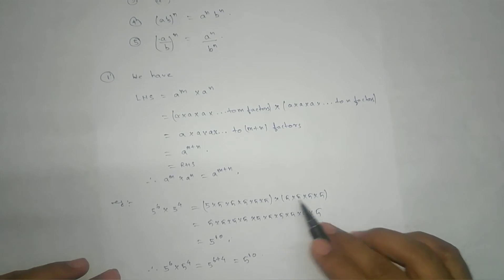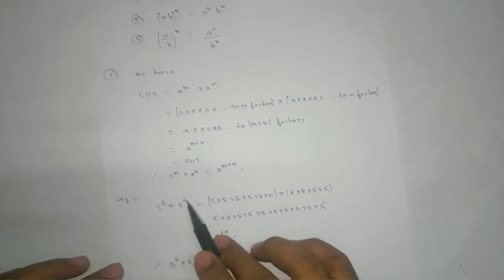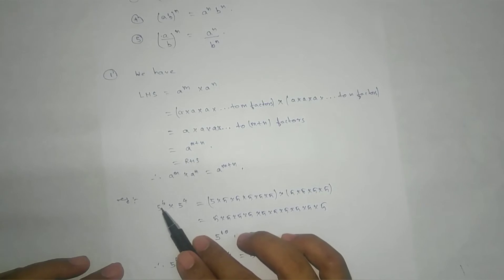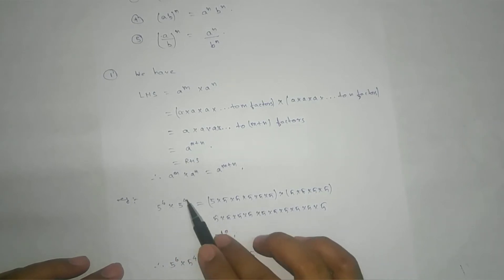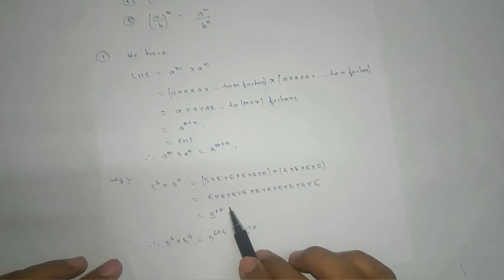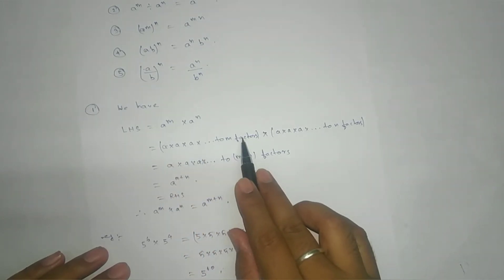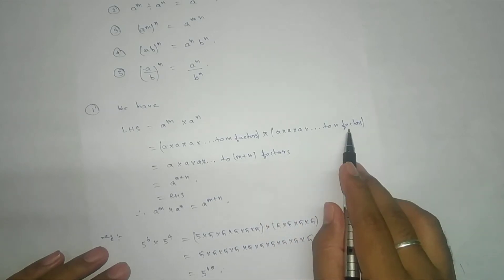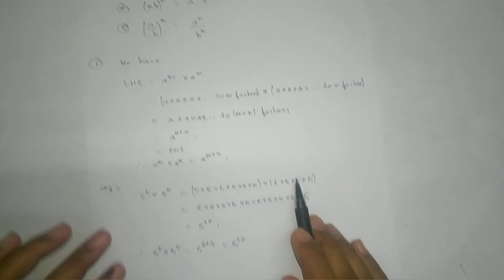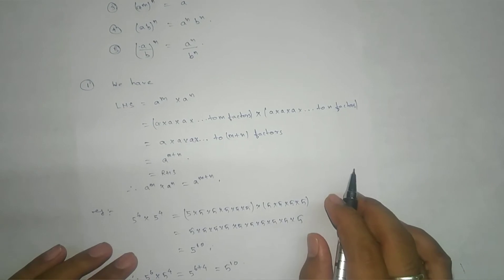For the first law, looking at the example: if we take 5 to the power 6 and 5 to the power 4, we get 5 to the power 6 plus 4, that means 5 to the power 10. How? We write 5 six times and four times. If we take out the bracket, you can see that 5 repeats 10 times, giving 5 to the power 10. Similarly, a to the power m means a multiplied m times, and a to the power n means a multiplied n times. Taking out the bracket gives m plus n factors, yielding the required result.